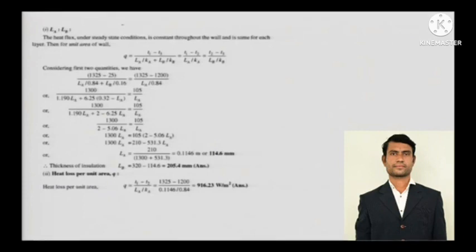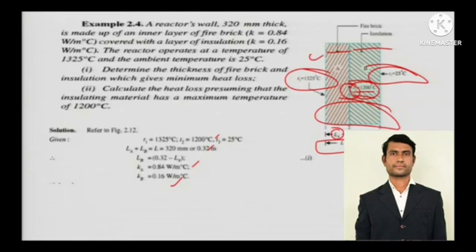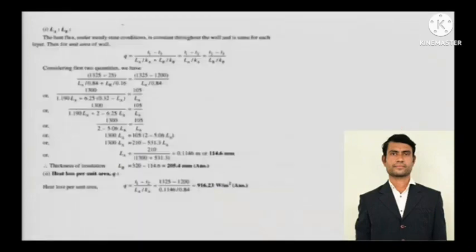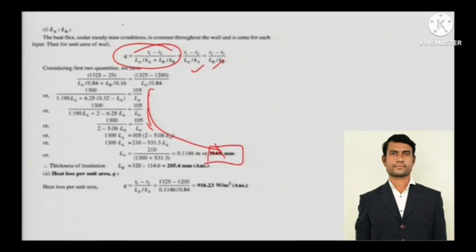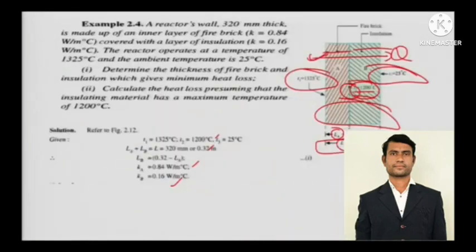Since heat flow is steady, heat entering from one face exits with the same magnitude. So Q equals (T1 minus T3) divided by (LA over KA plus LB over KB), which also equals (T1 minus T2) divided by (LA over KA). Using these two expressions together, and since LA is the unknown with everything else known, you can calculate LA — the thickness of the fire brick. The thickness of the insulation LB equals 320 mm minus LA.